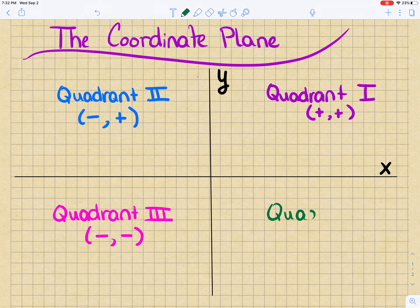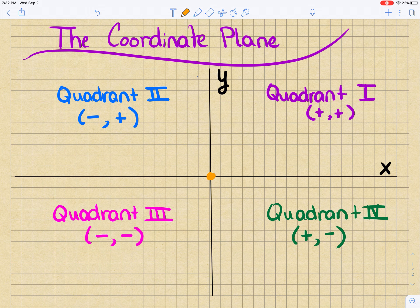There's also one more thing you need to make sure you're aware of, and that's the origin. This is where we start counting. This is called the origin, and it's where x and y are both 0. So that's (0, 0).